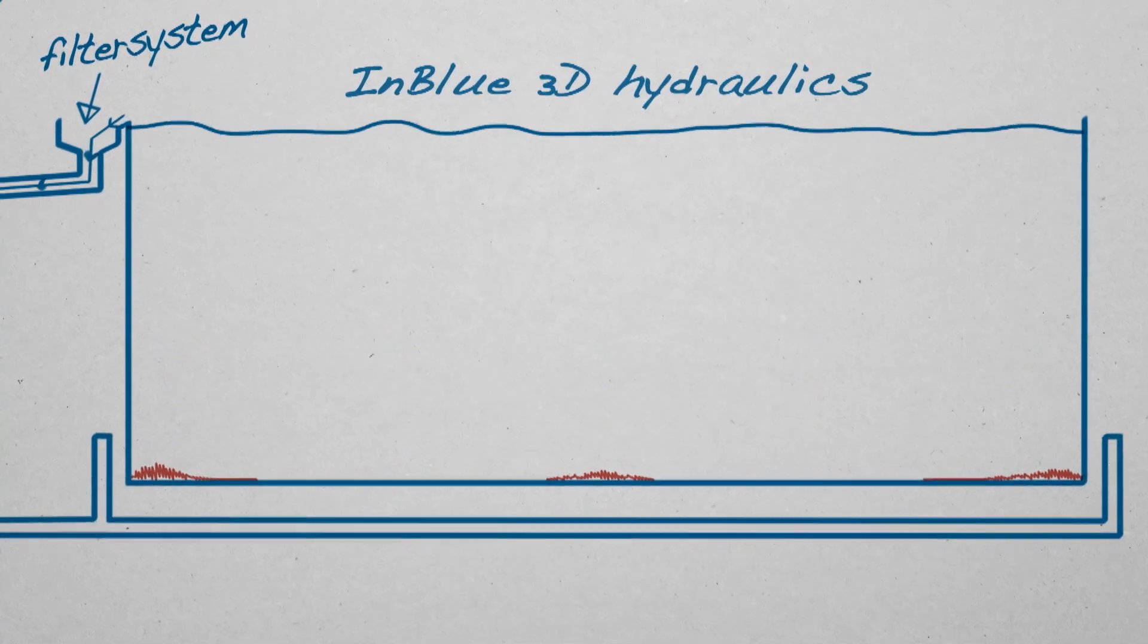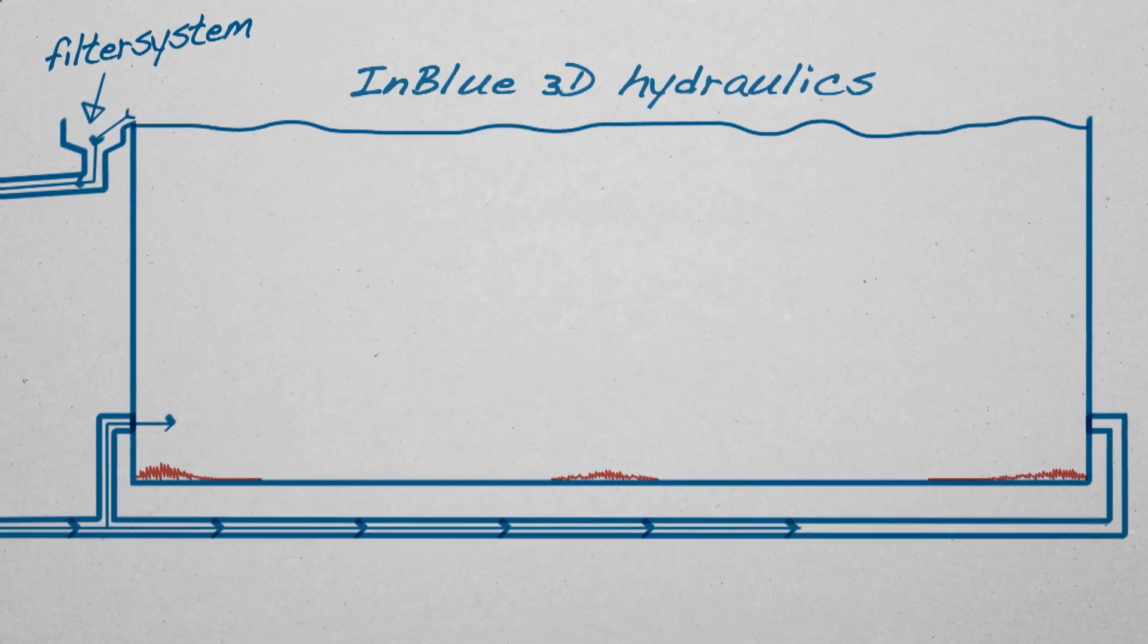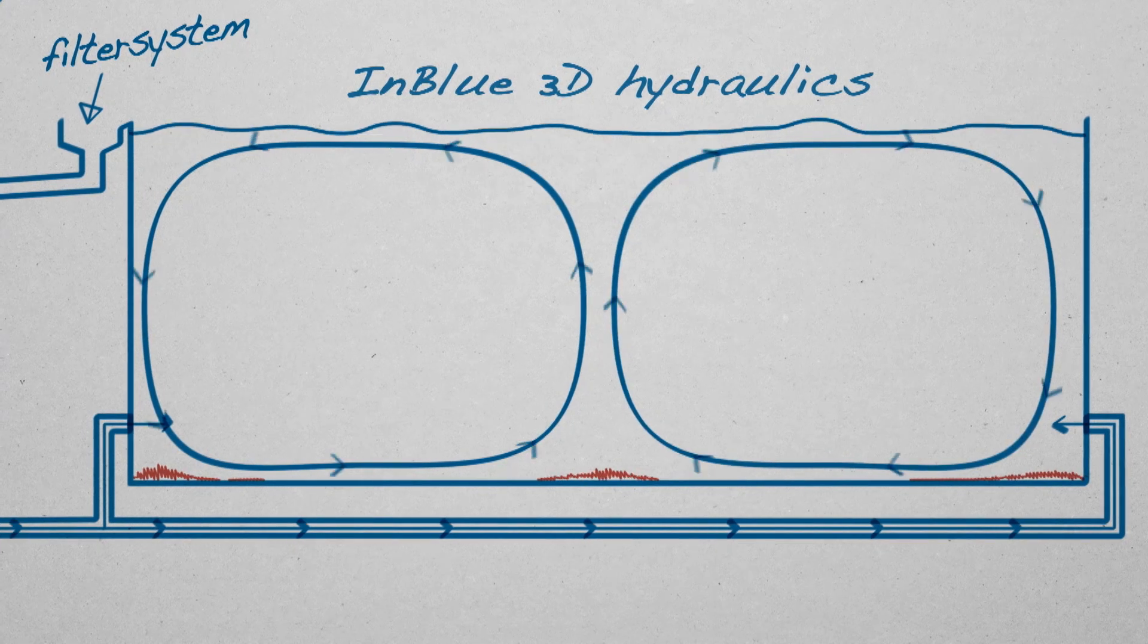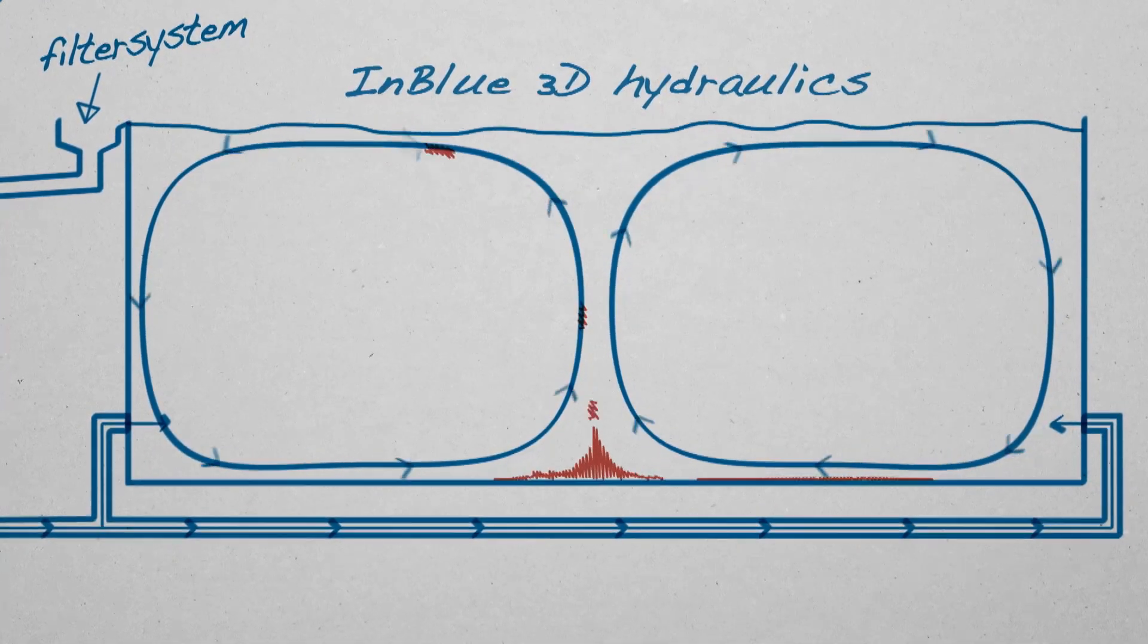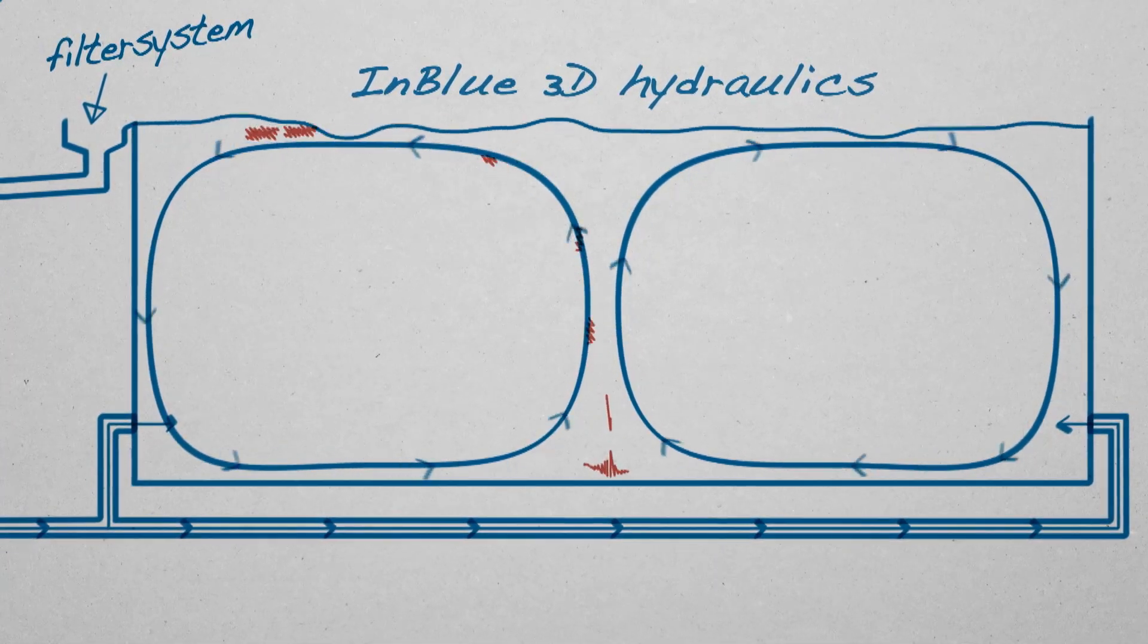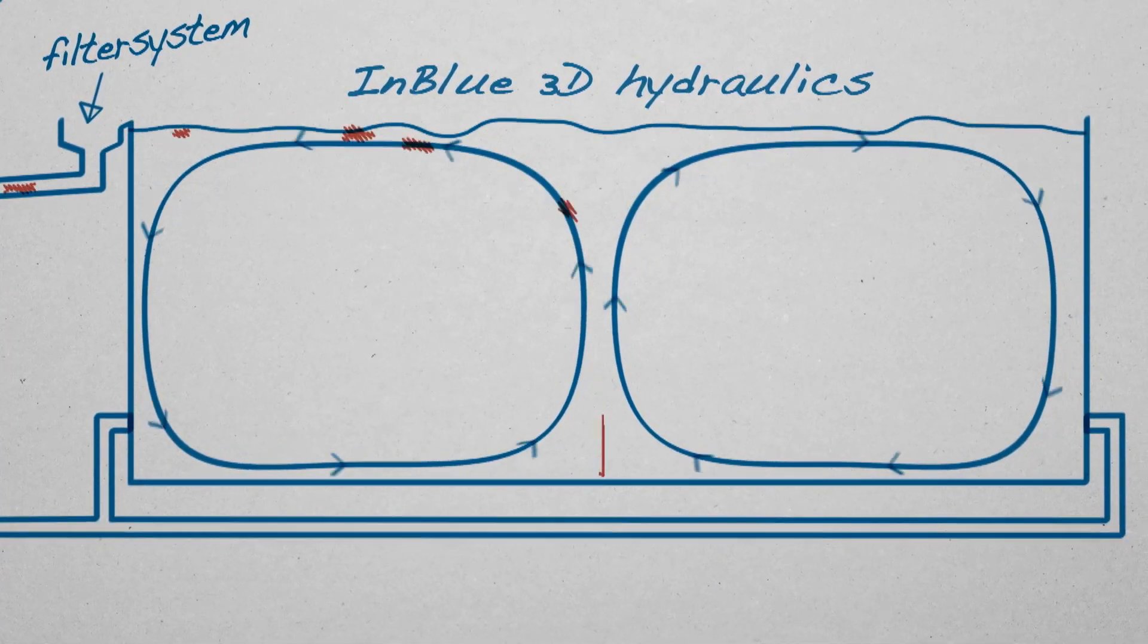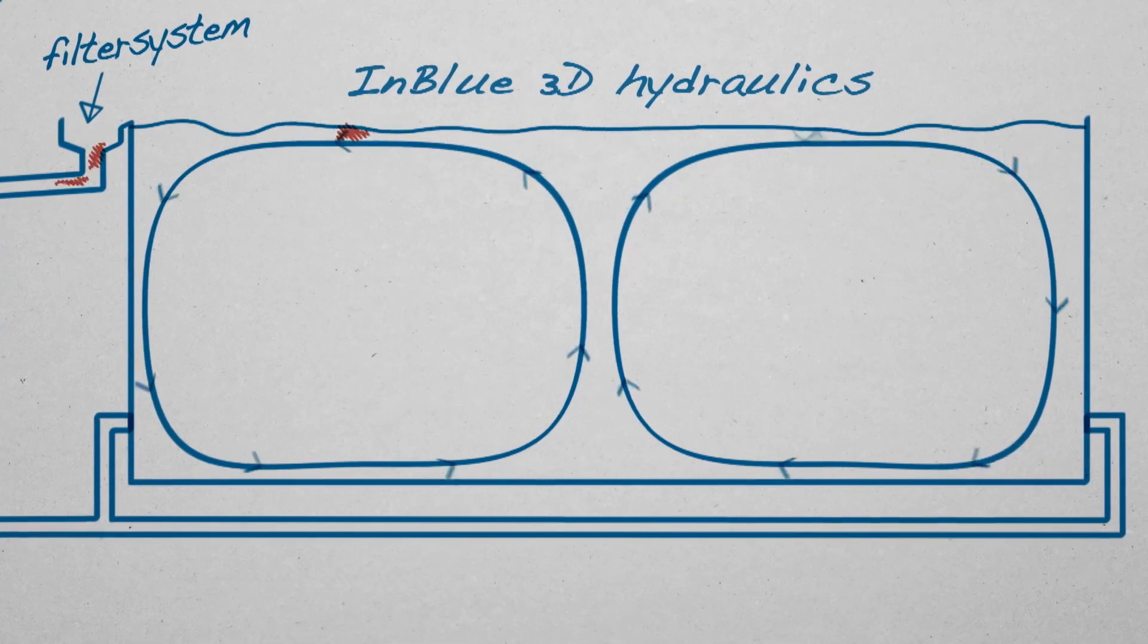With 3D hydraulic computer models, InBlue makes sure these unwanted particles are quickly transported to the filtration system. Strategically placed low head side nozzles eliminate dead zones and generate a current that carries particles from the pool floor and surface to the side gutters.